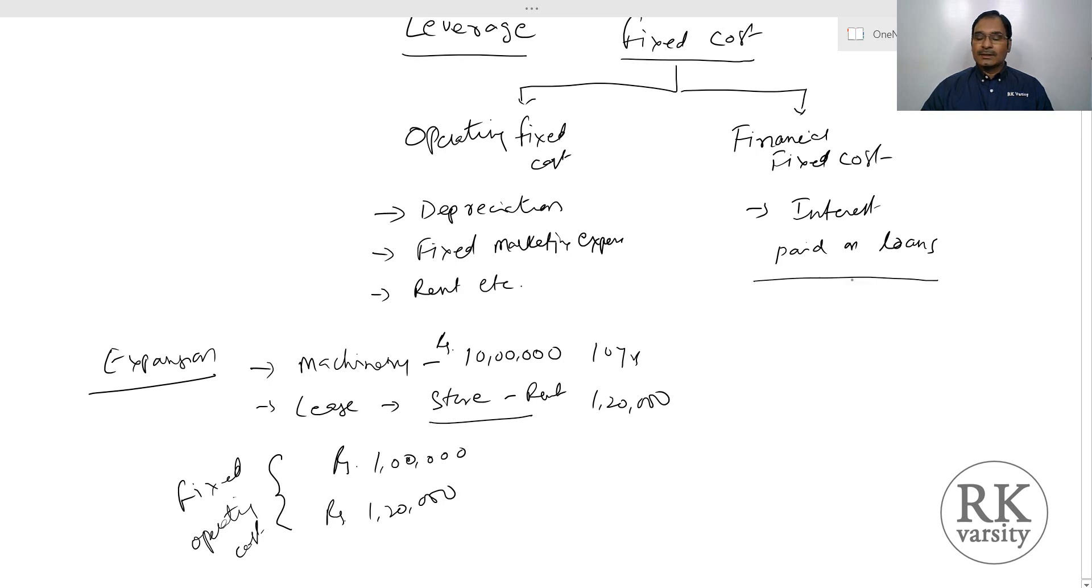Similarly, organizations may also consider going for loans. In the sense, by borrowing a loan from a bank or financial institutions, it can expand its funding. For this machinery, it requires Rs. 10 lakhs. One option is it can buy this machinery with its own funds or it can buy the same machinery with borrowed funds. So if it is using borrowed funds, that means it has to pay the interest.